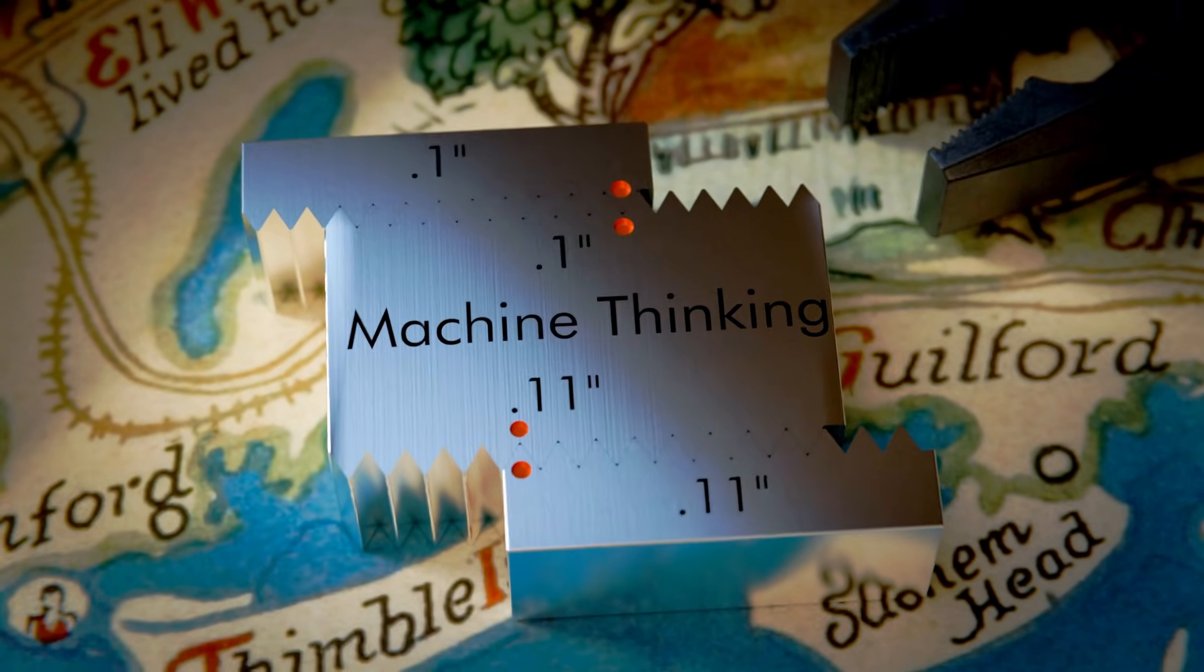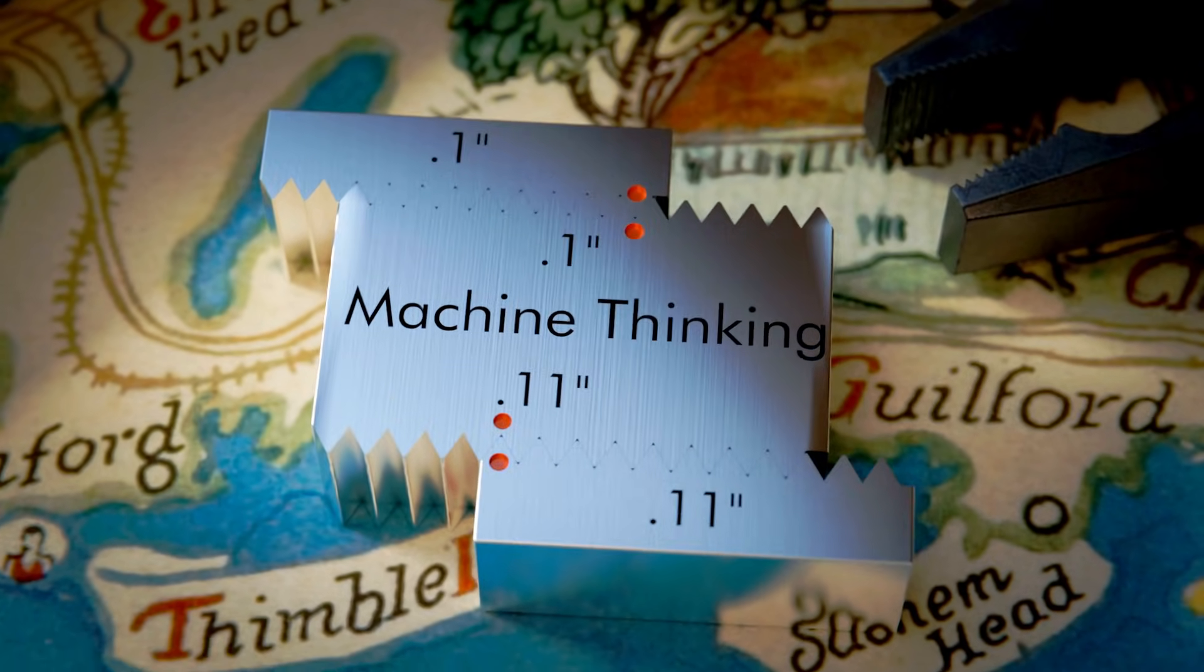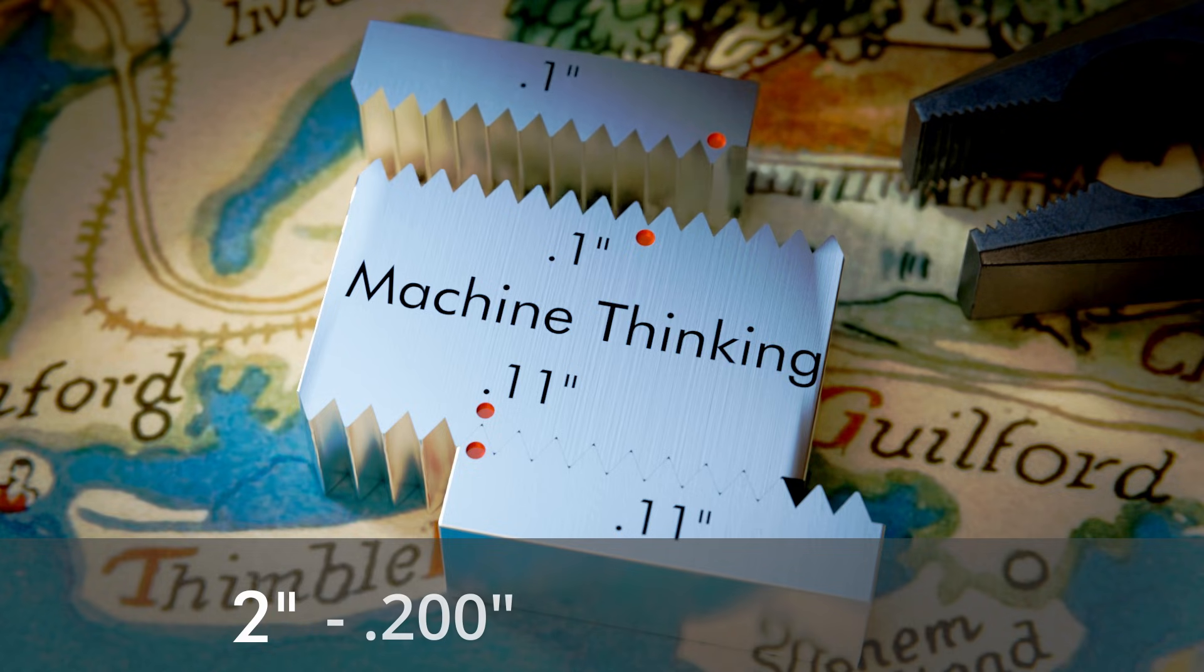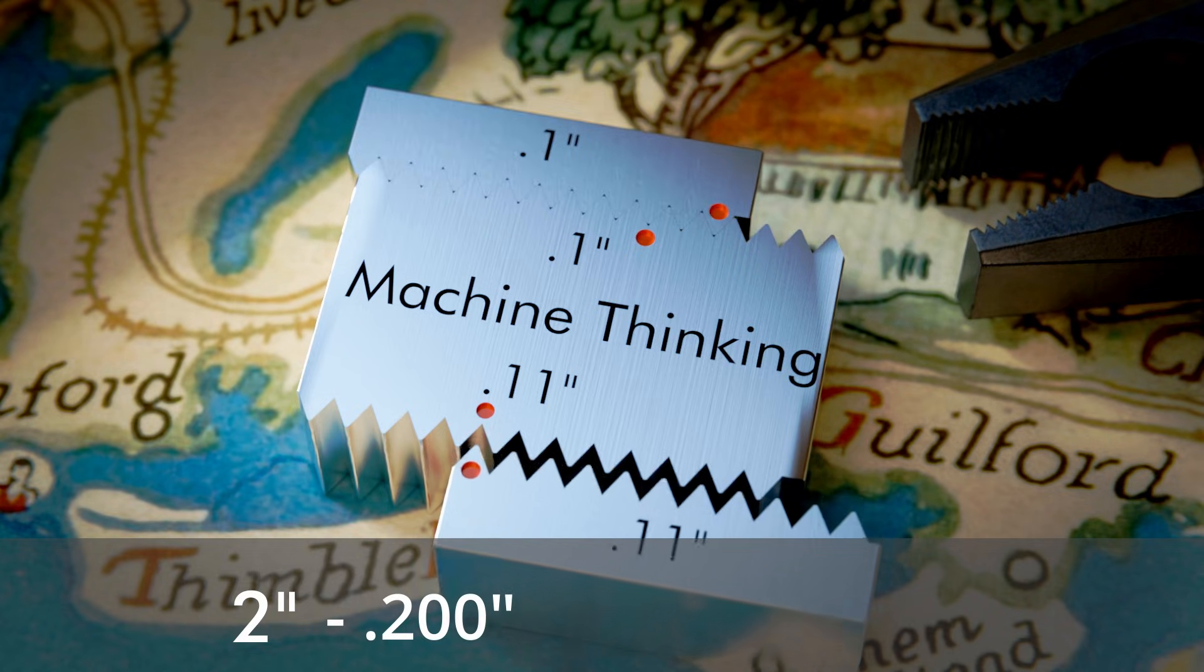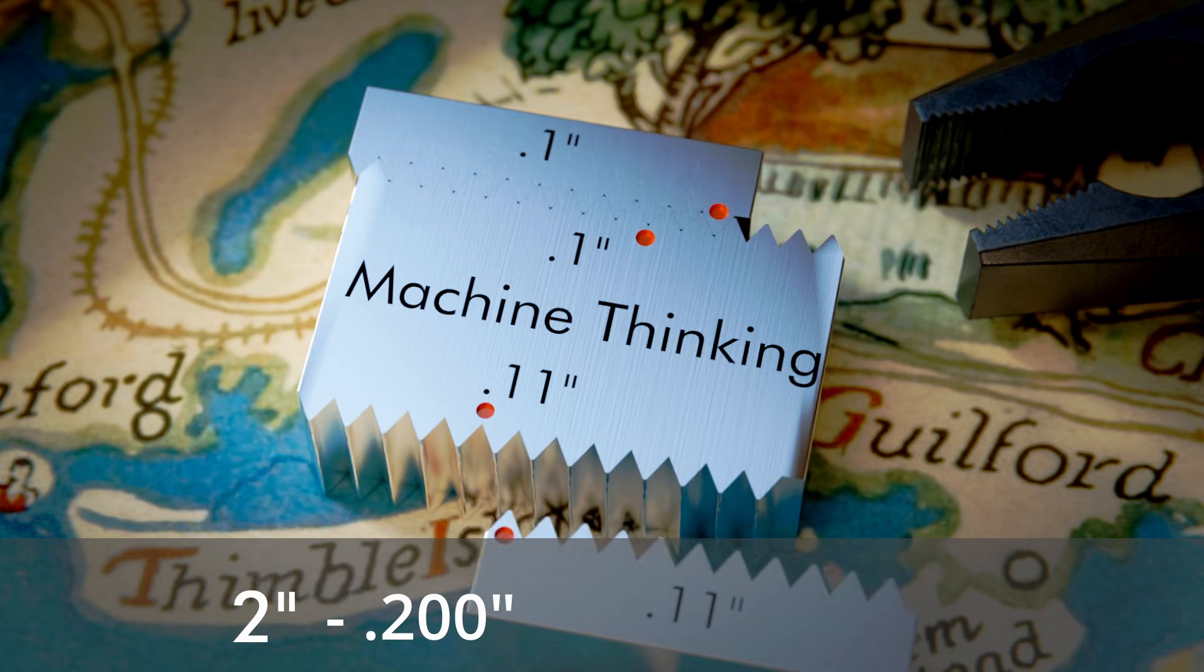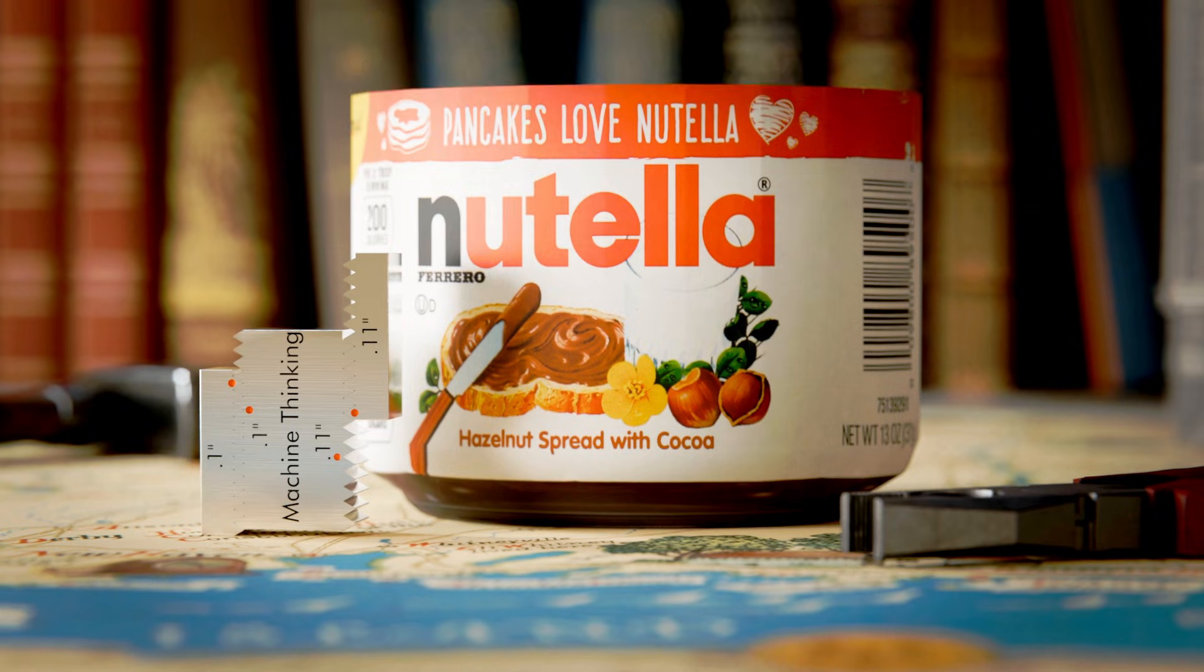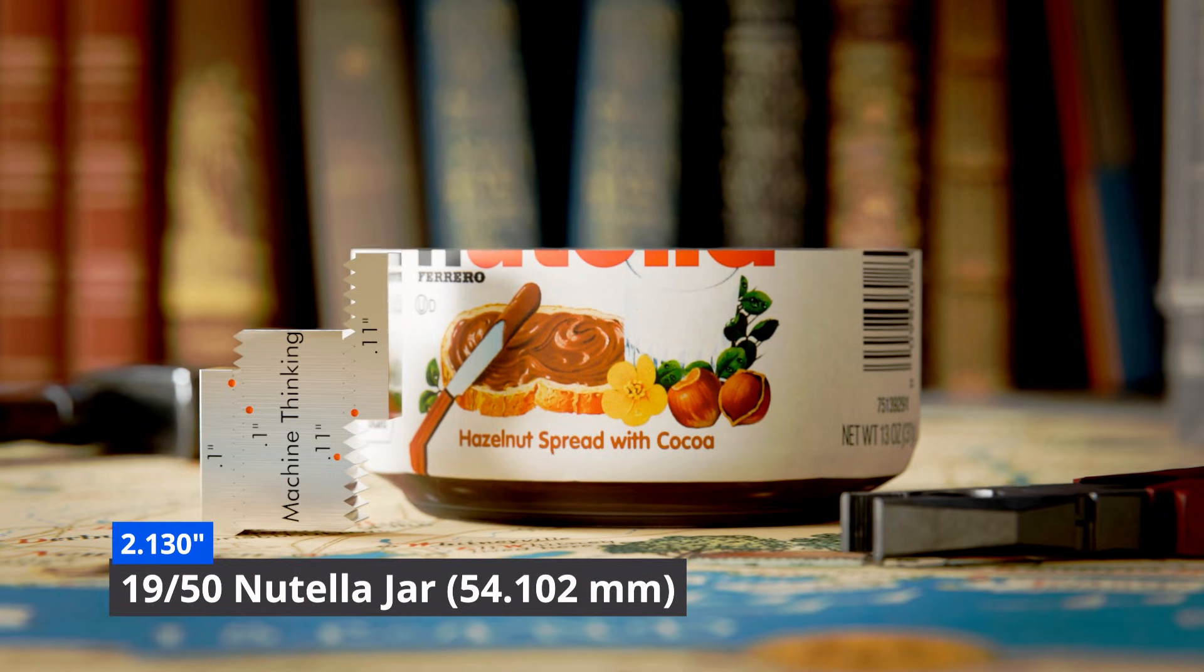Let's see it again with another example. Let's start with two inches, move the hundred thousandths side backwards, say twice, so minus two hundred thousandths. Then move the hundred and ten thousandths side forward three times. Now the net adjustment is plus a hundred and thirty thousandths. In metric, that's about nineteen fiftieths of a Nutella jar.